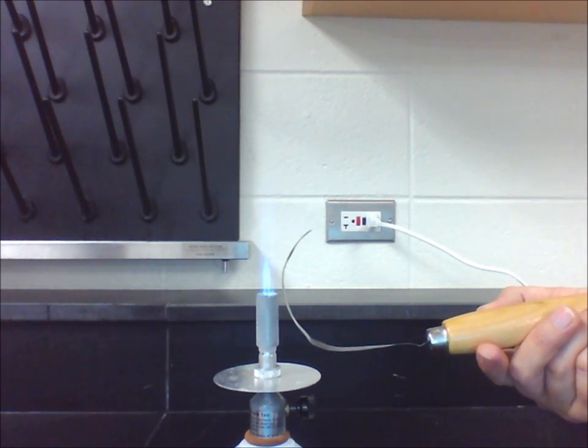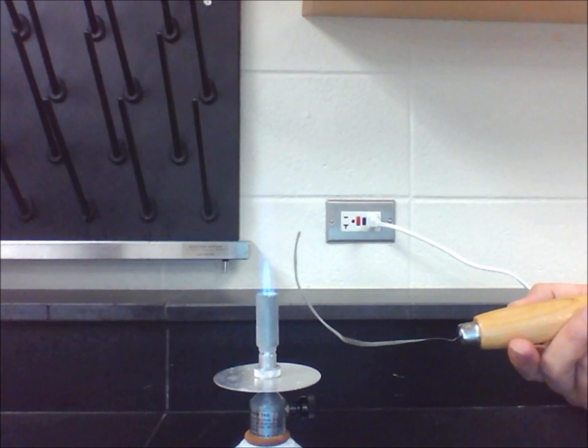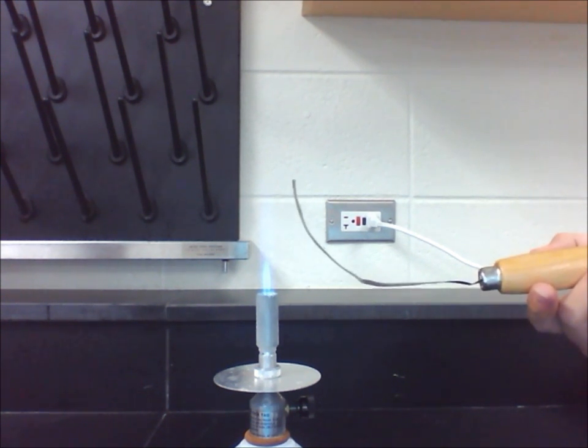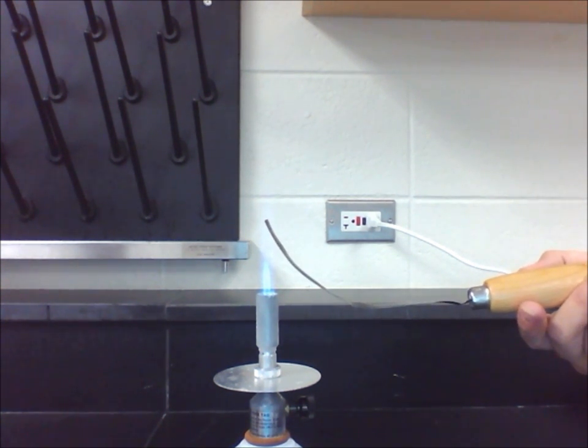The metal strip is made up of two different metals. Because one side expands at a faster rate than the other side, it will always curl in the same direction.